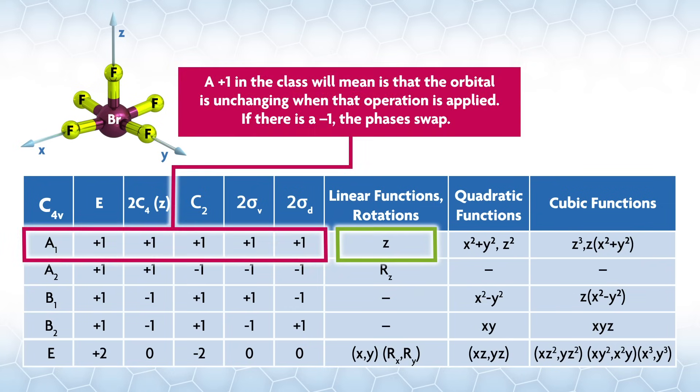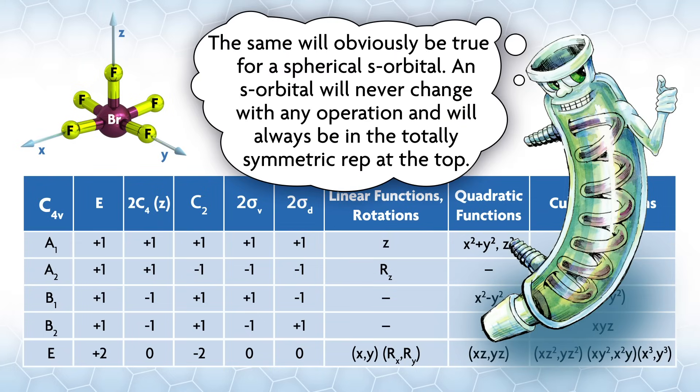Scanning down the column of linear functions, you see that the z vector is in the A1 rep. Essentially what a plus one in the class will mean is that the orbital is unchanging when that operation is applied. If there's a negative one, the phase is swapped. If you look at what happens when you do a C4, C2 along z, sigma v, and sigma d on the pz orbital, the phase doesn't change and the orbital is unmoved. So plus one is given across all of these classes and pz is in the A1. The same will obviously be true for the spherical s orbital. An s orbital will never change with any operation and will always be in the totally symmetric rep at the top.